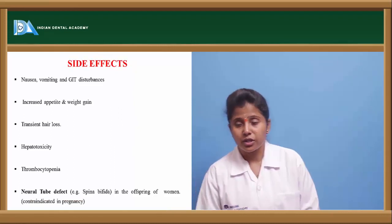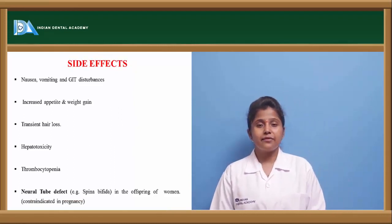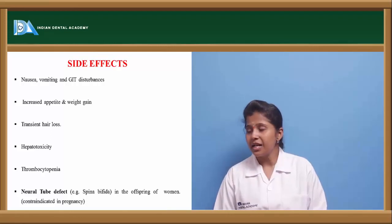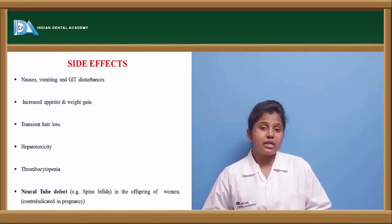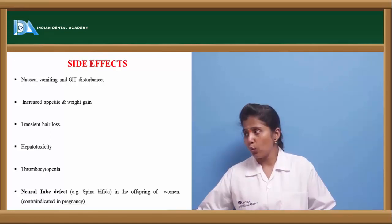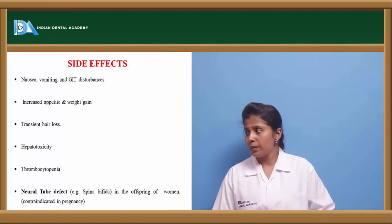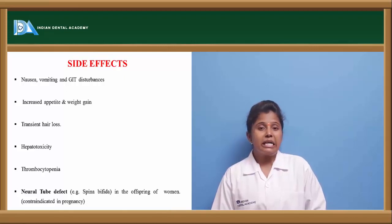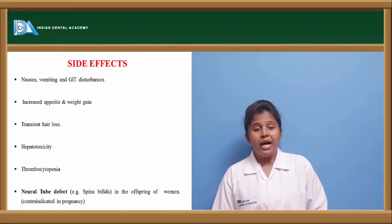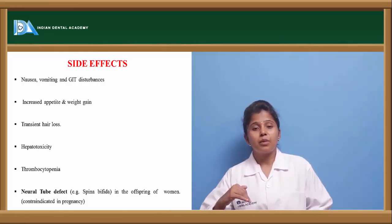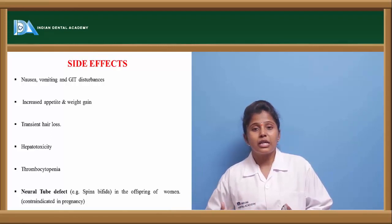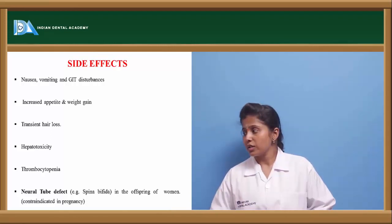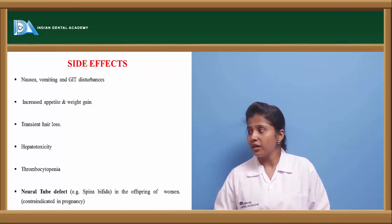Side effects of valproic acid include nausea, vomiting, GI disturbances, increased appetite leading to weight gain, transient hair loss, rare hepatotoxicity, thrombocytopenia (decreased platelet count), and neural tube defects like spina bifida in offspring. Co-administration with carbamazepine, phenytoin, topiramate, or phenobarbital inhibits metabolism of valproic acid.